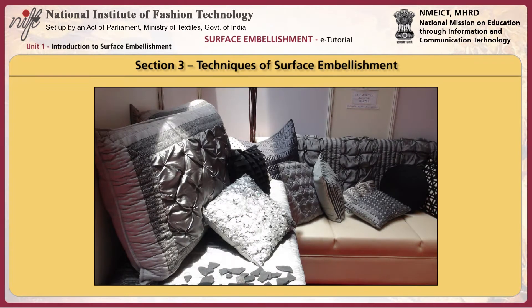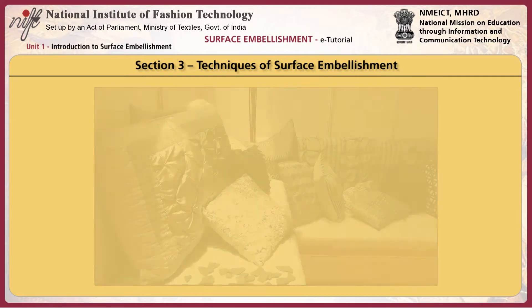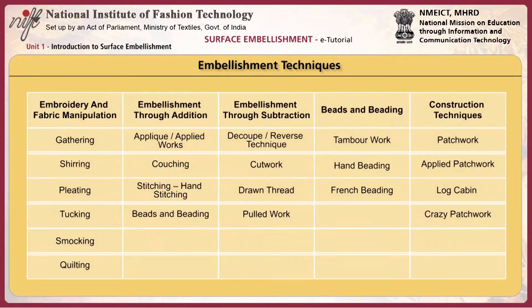We will now move on to a review of the various techniques of surface embellishments. First, let's understand the term fabric manipulation. Any technique that reshapes the surface of a material is known as fabric manipulation. There are different types of fabric manipulation techniques. They include embellishment through addition, embellishment through subtraction, beads, beading, and construction techniques.